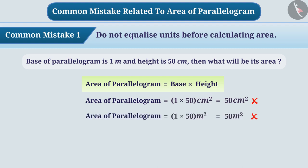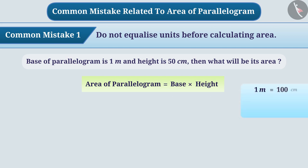While calculating area, it is necessary to make sure that units of quantities are equal. Here, we can write 1 meter equals 100 centimeters. Now the base is 100 centimeters and height is 50 centimeters. Therefore, area of the parallelogram is 5,000 square centimeters.